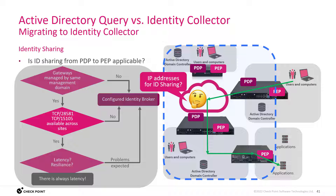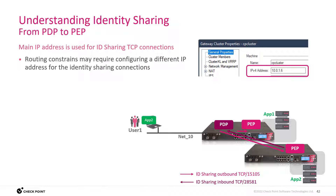Don't underestimate the complexity of identity sharing from PDP to PEP — when it comes to the TCP ports that are used and, more importantly, the IP address used to terminate and initiate these connections. The main IP address is used by default to establish connections from the PDP to the PEP and vice versa. Routing must work, and in this example you can see this IP address will never make it across the internet.